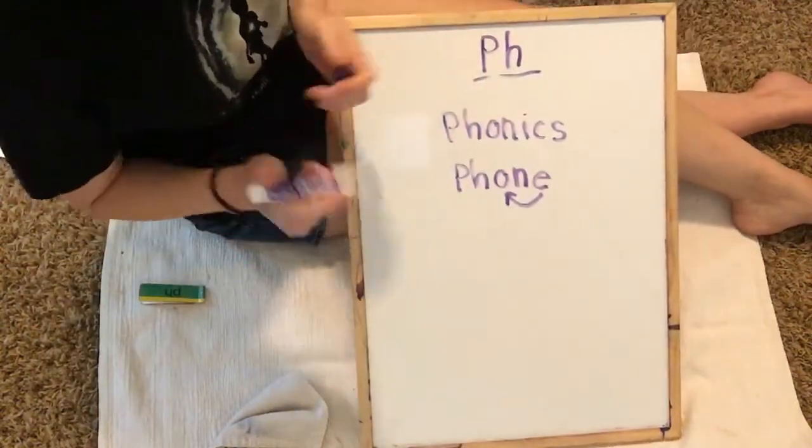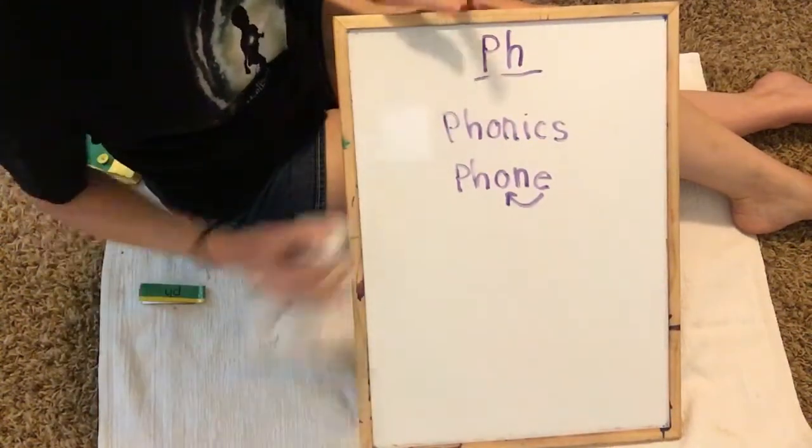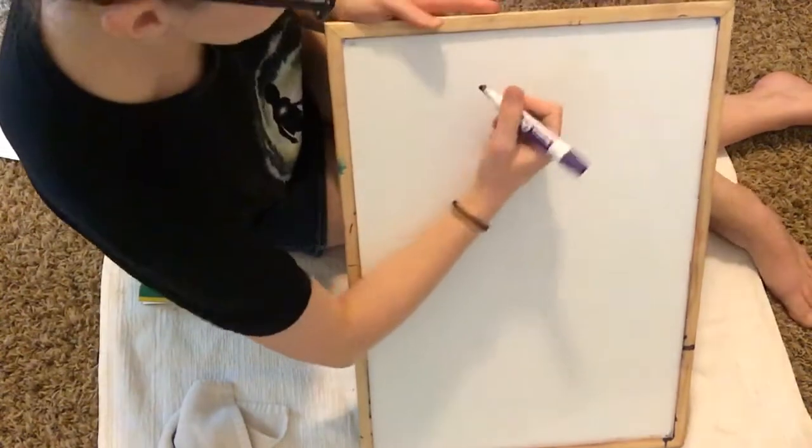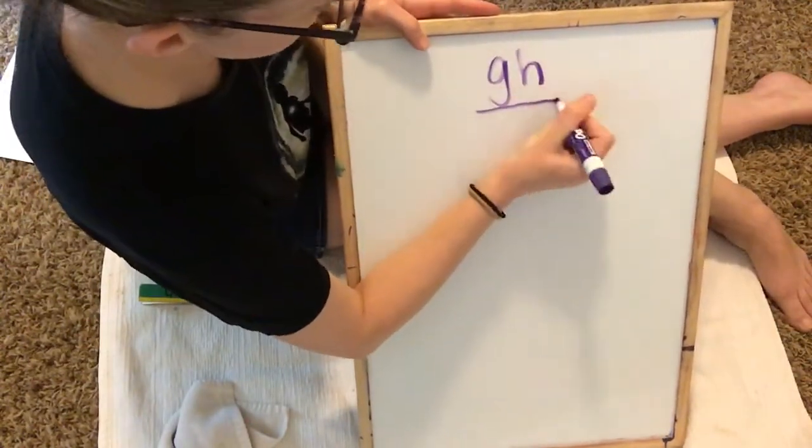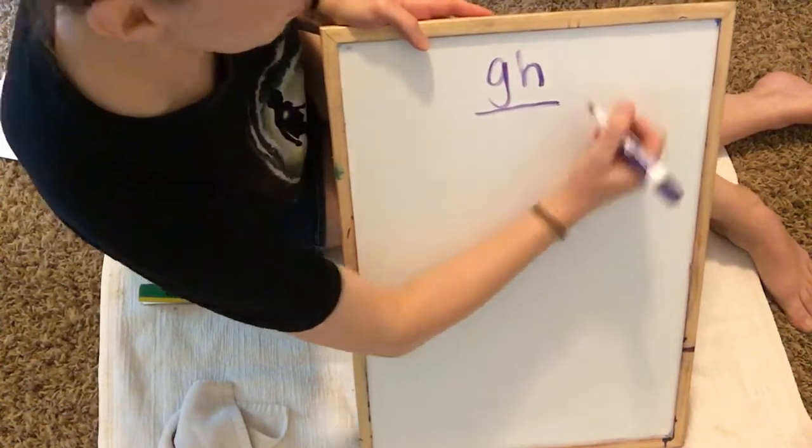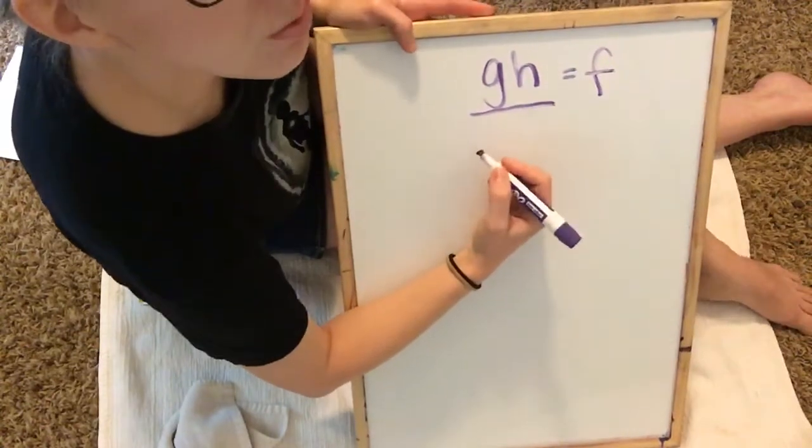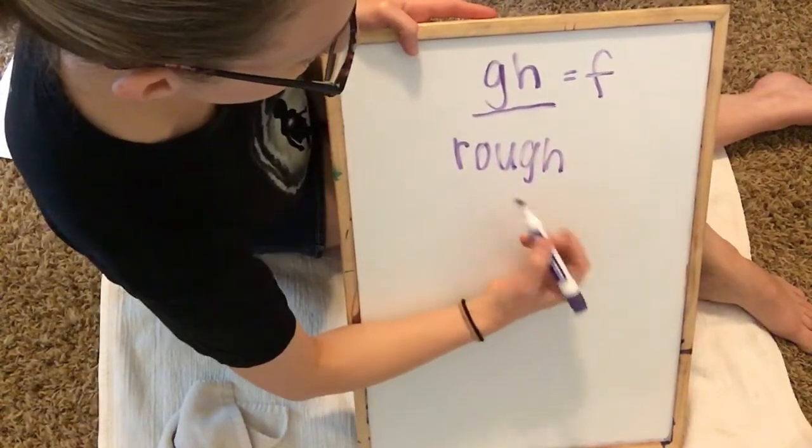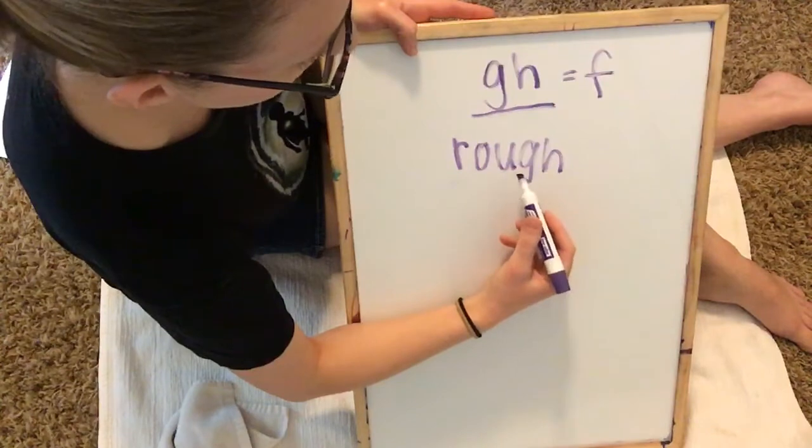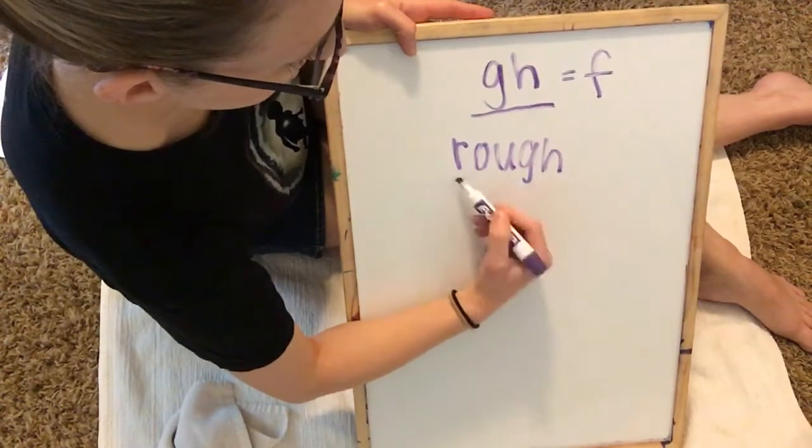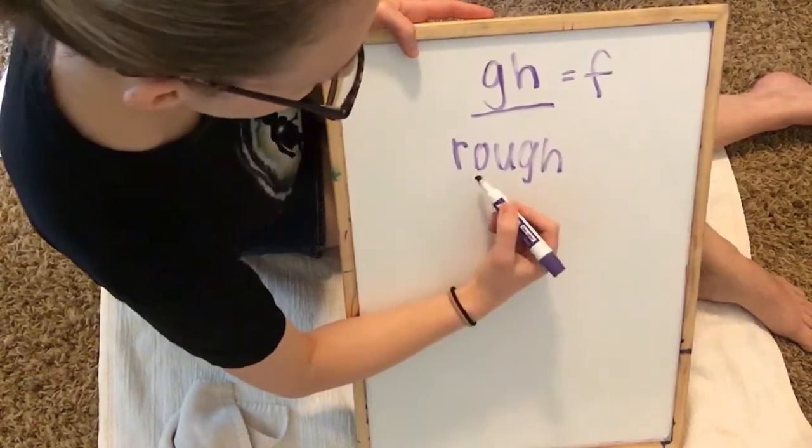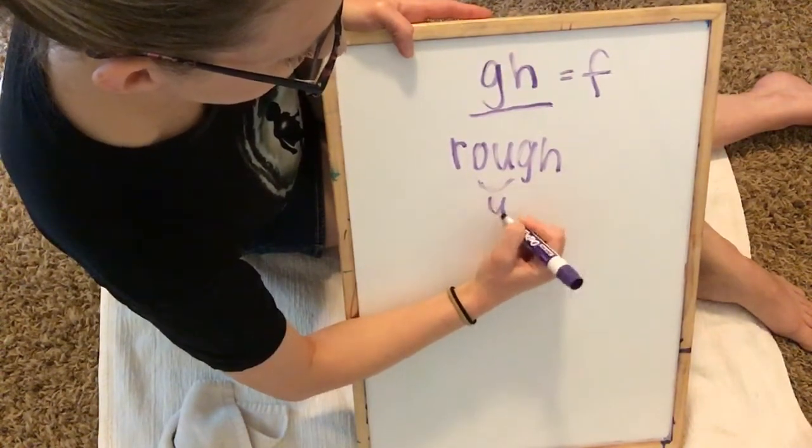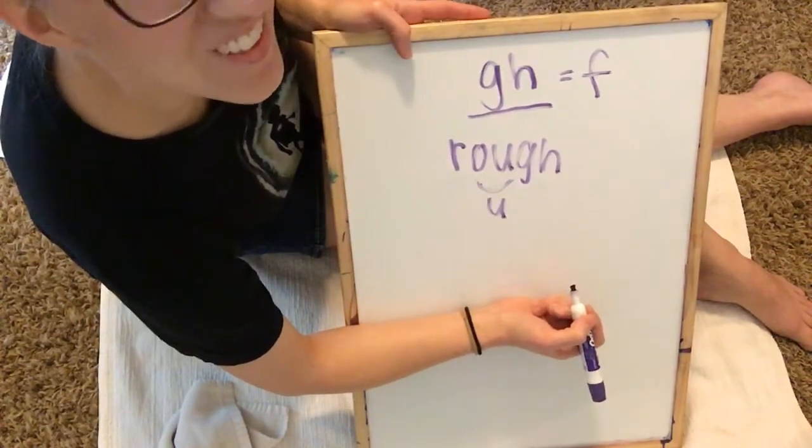All right, now sometimes you will find a few words out there that use G, H as the F sound, as in rough. So that's R, O, U, G, H. R, U, F. Rough. It's almost kind of a sight word because the O and the U are saying uh, it's kind of strange isn't it, rough?